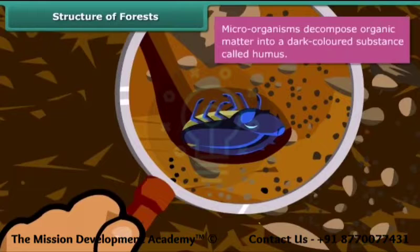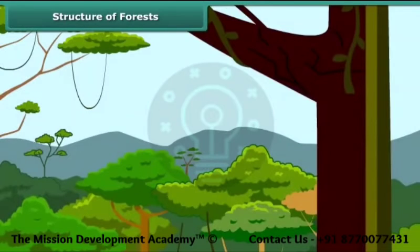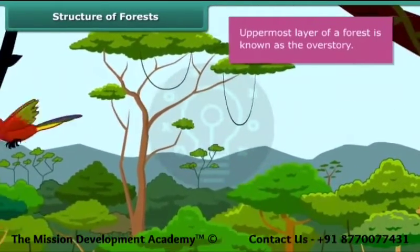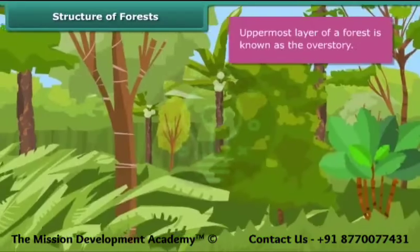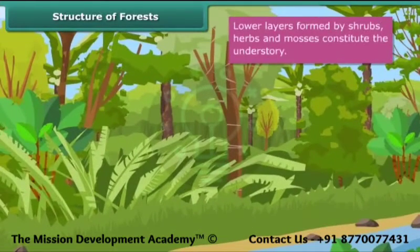Microorganisms decompose organic matter into a dark colored substance called humus. Humus provides nutrients to plants and makes soil fertile. A forest has a layered appearance with trees of different heights. While the uppermost layer is known as the overstory, the lower layers formed by shrubs, herbs and mosses constitute the understory.